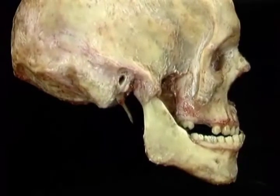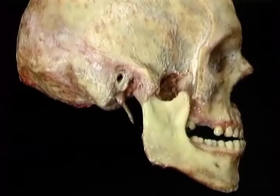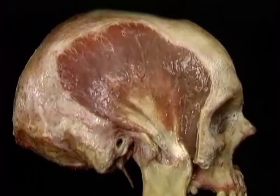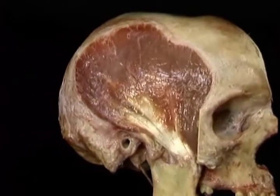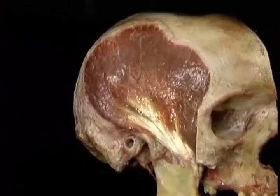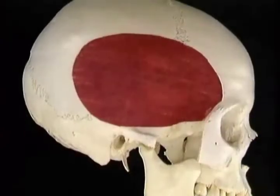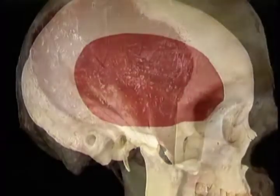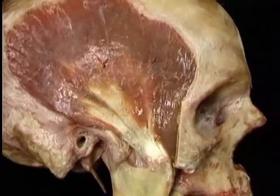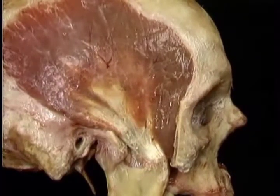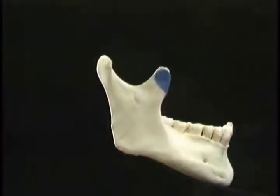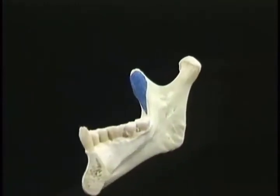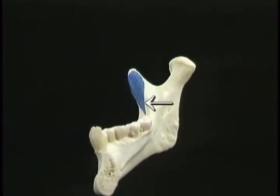Before adding the next muscle, the temporalis, to the picture, we'll put the coronoid process back in place, since that's where the temporalis inserts. Here's temporalis, the largest of the muscles of mastication. It's shaped like a fan. The temporalis arises from the wide area on the side of the skull that lies within the temporal line. The fibers converge from above and from behind on the coronoid process, inserting on the outer and inner aspect of the coronoid process, and also on the anterior part of the ramus of the mandible.